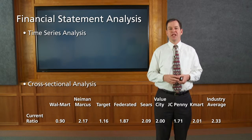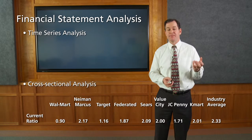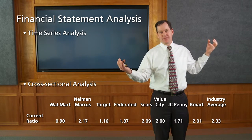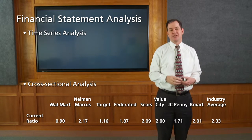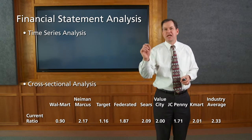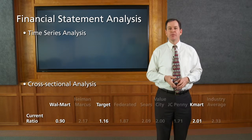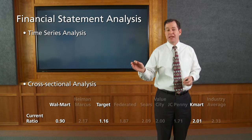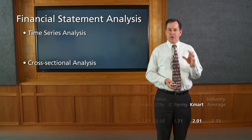Another benchmark is cross-sectional analysis, where we compare a firm with other firms in its industry. Here we have a plot of the current ratio for firms in the retail industry. What's striking is that simply looking at the retail industry broadly would have you comparing Walmart with Neiman Marcus — but those are very different firms. Neiman Marcus is a high-end department store; Walmart is a discount retailer. You'd want to compare Walmart with Kmart and Target to get a sense of how Walmart performs relative to its competitors.